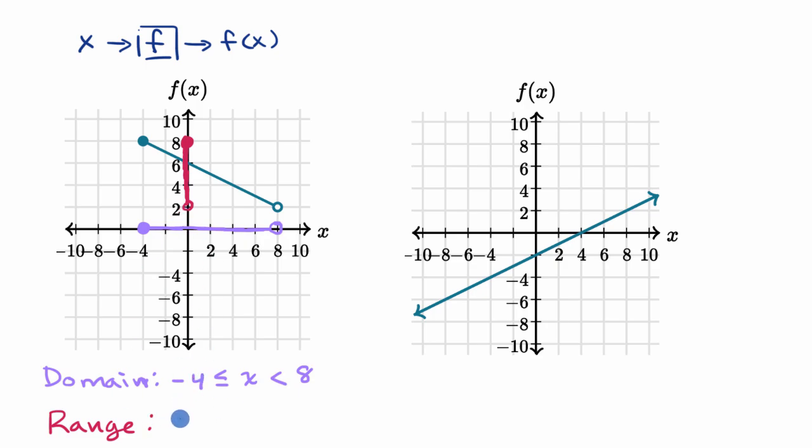So how would we define the range right over here? Well, we can start at two, but the function can't take on two. So the function is going to be greater than two. It's not greater than or equal to, but then the function can go all the way up to including eight. And so we're done with the range of this first function.